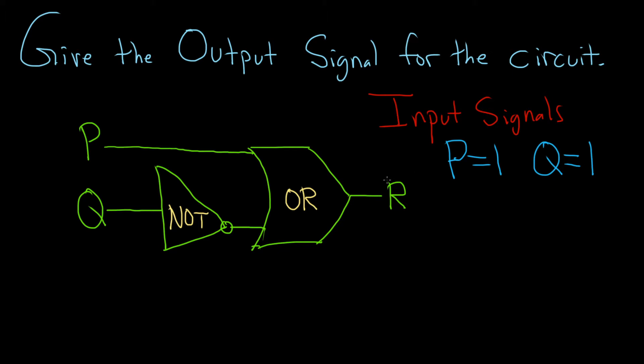The way I like to do this is to just work left to right and I start by writing down the input signals on the left. So P is 1 and Q is 1.